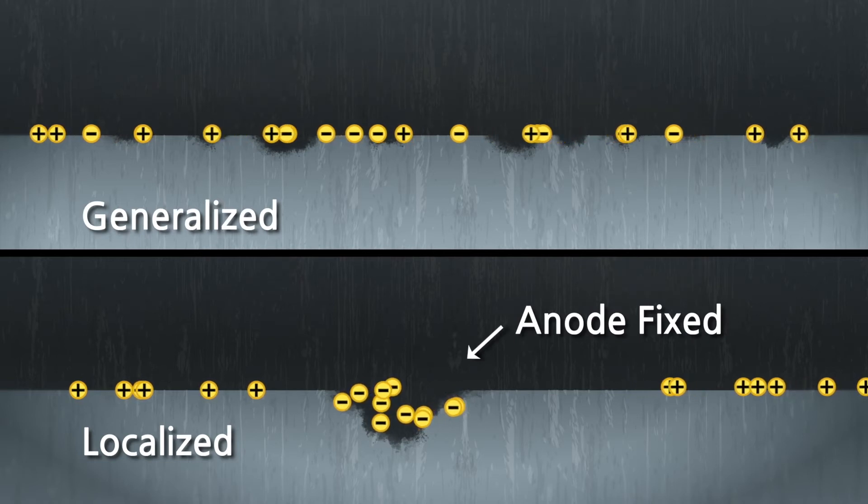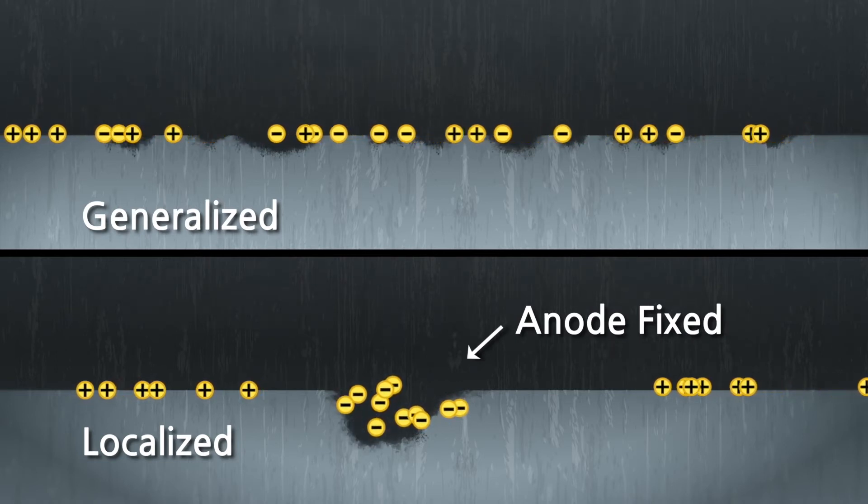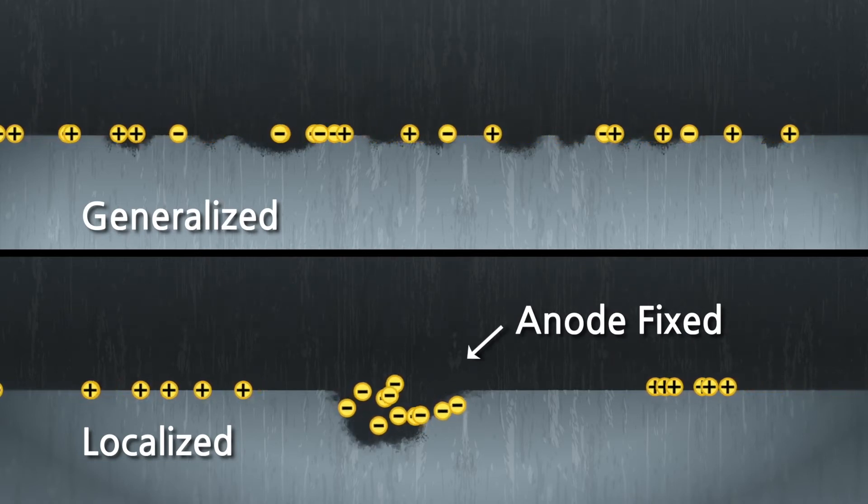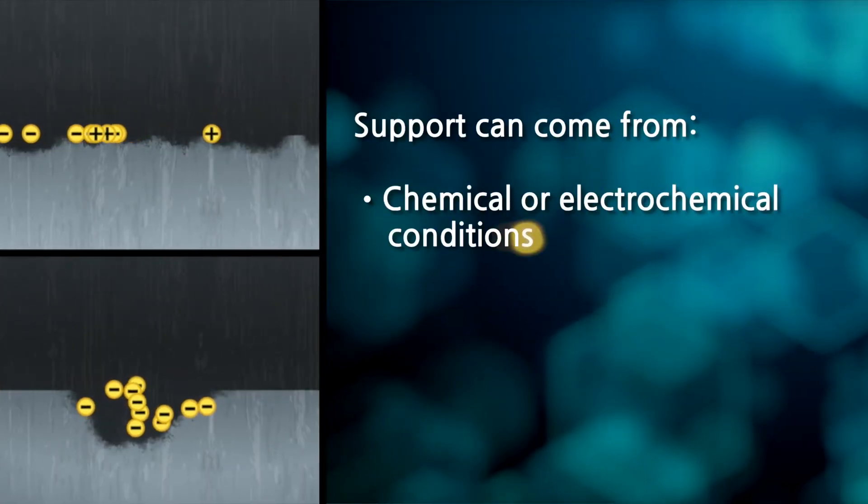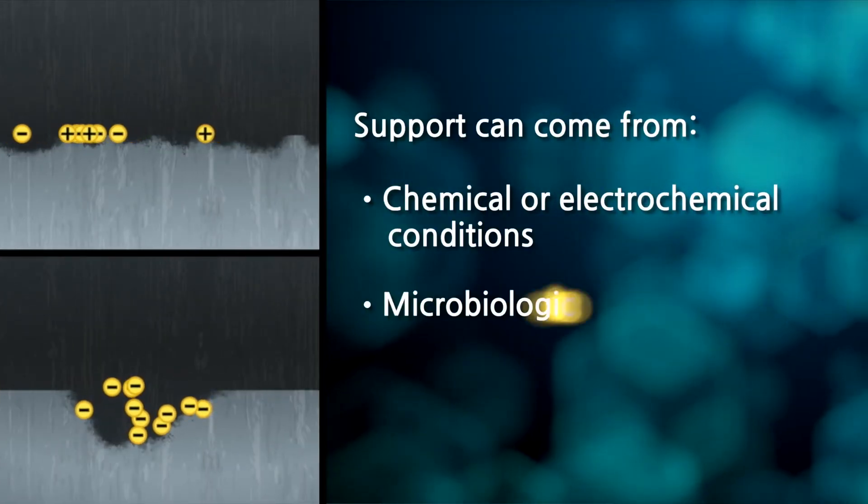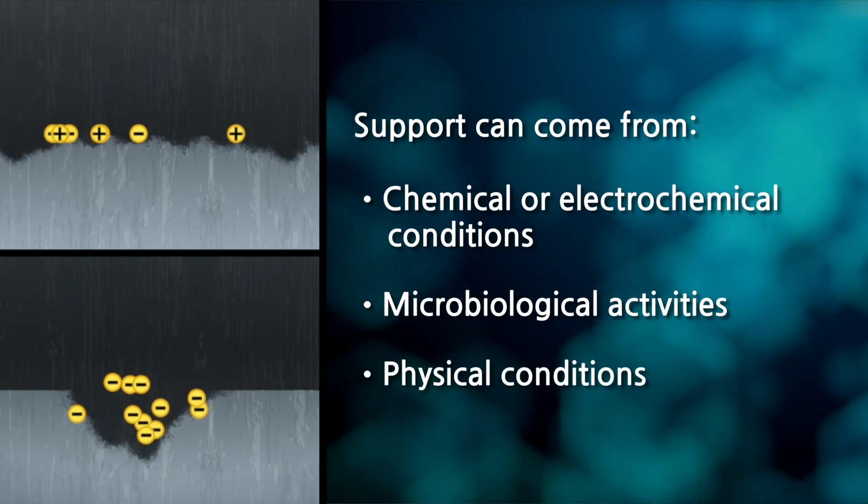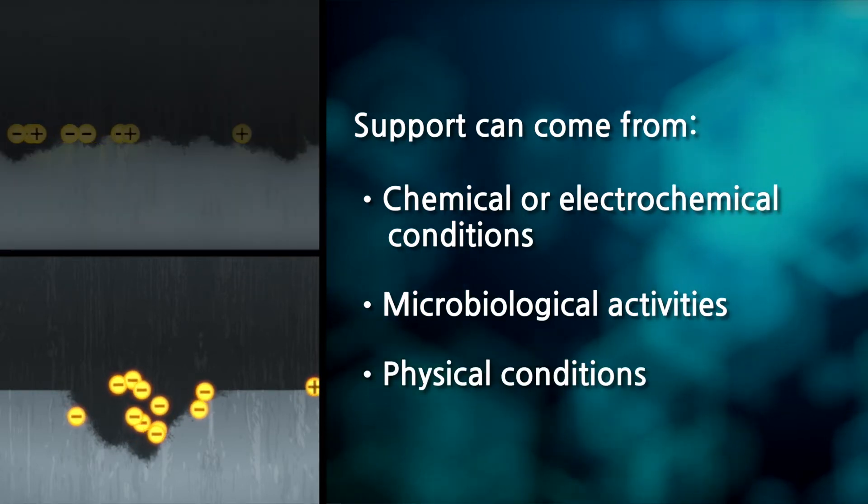For the pit to grow, the environment around the pit must be able to support the continuing corrosion cell reactions. This support can come from chemical or electrochemical conditions, microbiological activities, and physical conditions. MIC is a localized pitting mechanism.